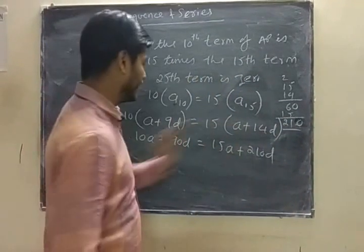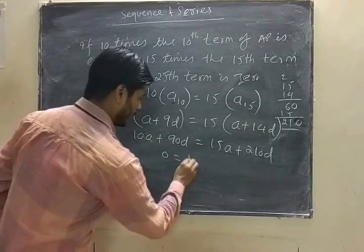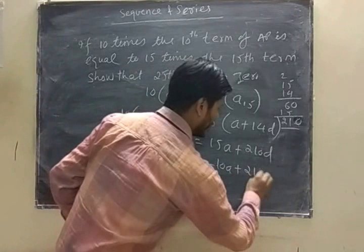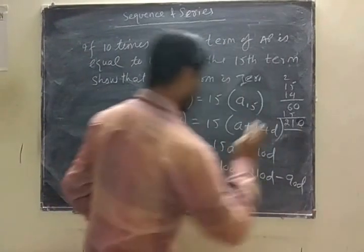Now what is the formula for a_n? That is a plus 10, a minus 10, a plus 210d minus 90d.